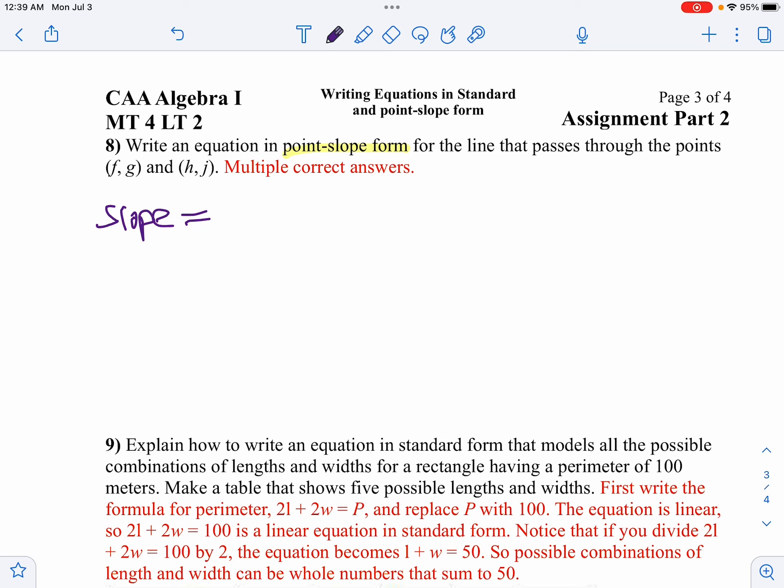Notice we don't have numbers here, so we're going to get probably some ugly-looking equation here. Remember, it goes x, y, and x, y. So I'm going to say my slope is going to be j minus g over h minus f.